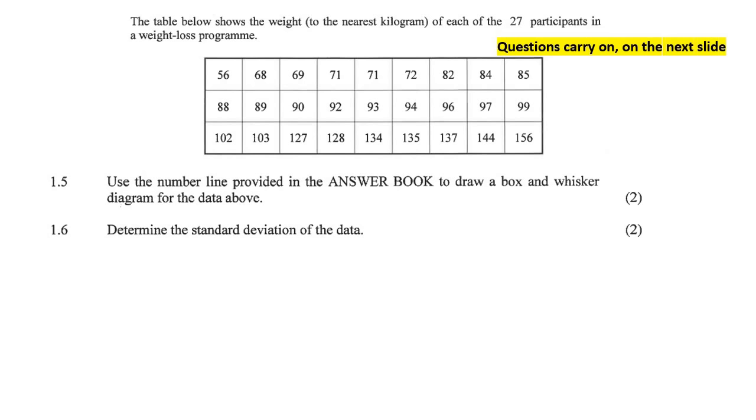Use the number line provided in the answer book to draw a box and whisker diagram for the above data. So a box and whisker has five different things. It's got a minimum value, a maximum, and then it's just got Q1. Then it's got the median, and then it's got Q3. So what we do is, they would have given us a number line, but let's just go draw our own number line.